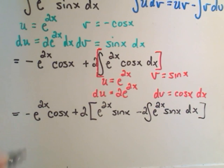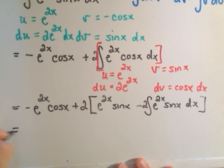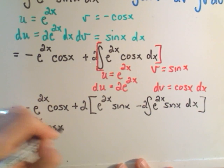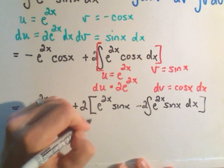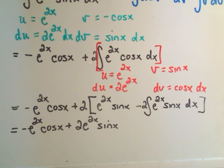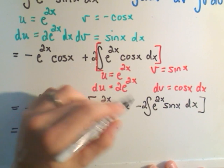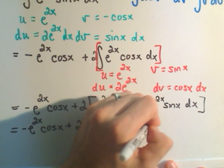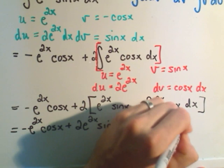Okay, if I distribute things out then, it says we get negative e to the 2x cosine x. If I distribute my 2, I'll get plus 2e to the 2x sine x. And if I distribute, again, the positive 2, I'll get negative 4 times the integral of e to the 2x sine x dx.